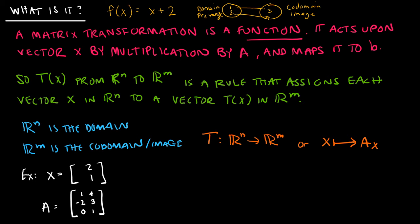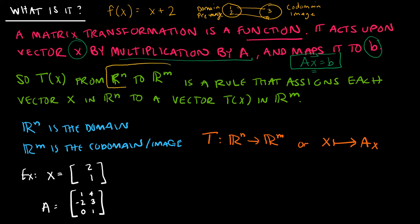A matrix transformation is a mapping — it is a function. It acts upon vector x by multiplication by A and maps to b. Those values should look familiar because we've been dealing with Ax = b, and that's exactly what we're talking about here. For a matrix transformation, we're transforming vector x by multiplication by matrix A to map to b. Keep in mind that it's very possible we're going from one dimension to another — for example, x in R2 multiplied by A gives a result in R3.